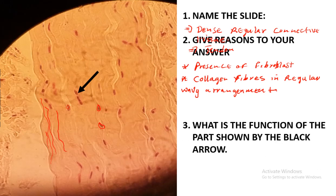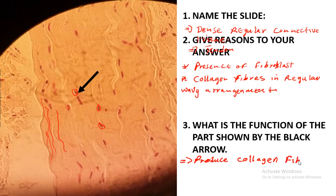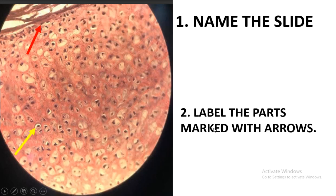The next question is: what is the function of the part shown by the black arrow? This part is the nucleus of the fibroblast. The function of the fibroblast is to produce collagen fibers. Remember, collagen fiber is a protein found in the extracellular matrix. So you can say it produces the extracellular matrix.